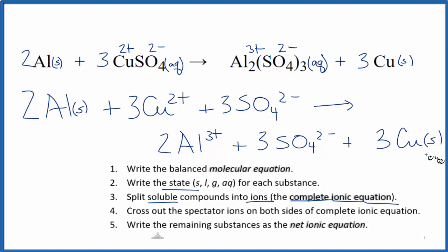So from here, we can now cross out spectator ions. These are ions that appear on both sides of the equation. And let's see, aluminum, that's different here. Cu 2 plus, also different, three sulfates, cross those out.